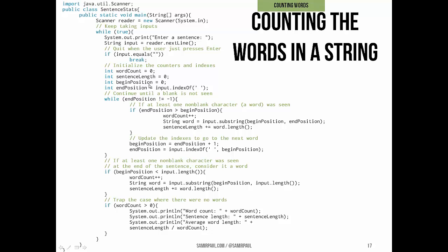Here we initialize a whole bunch of counters and indices for this loop. One to count the word, sentence length, the beginning and end position. Note that the end position here is initialized to the first instance of a space in whatever the user typed in. We will go until we don't see a blank. If we found a word, we're going to add one to our counter for the number of words. We're going to get that word using the substring method and the begin position and end position, and we're going to add the length of that word onto our accumulator for the length. And we'll update our indices, and then outside of that loop, if we found a non-blank character at the end of a sentence, we're going to consider it a word.